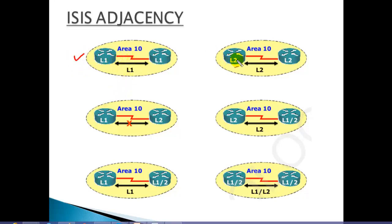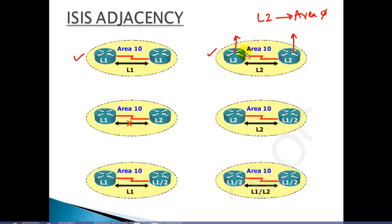If both routers are Level 2, that also works because Level 2 is similar to your backbone area, just like Area 0. When designing within the area, Level 2 and Level 2 form the neighborship, and Level 1 and Level 1 also form the neighborship.